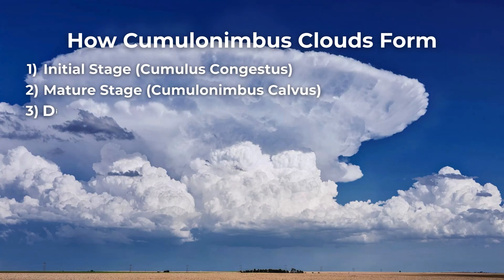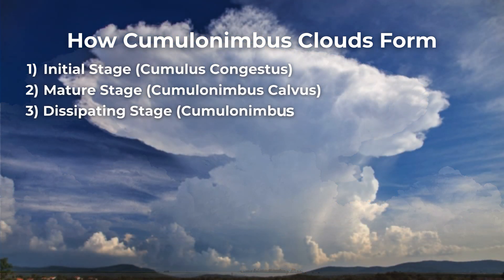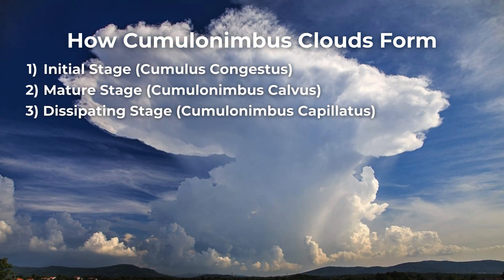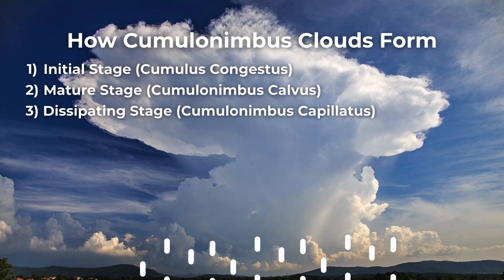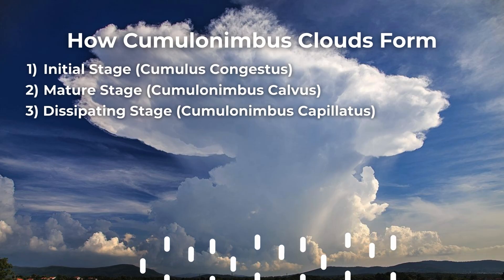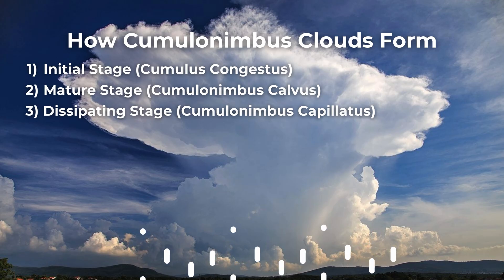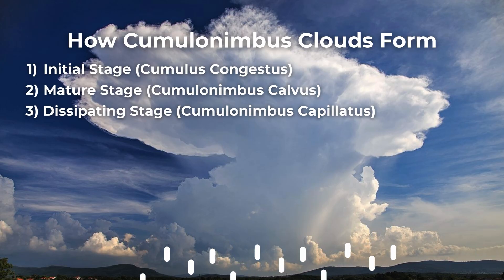Third, the dissipating stage: cumulonimbus capillatus. At a certain point, the cumulonimbus loses a large portion of its moisture as precipitation falls back to Earth. The downdrafts generated by the heavy precipitation begin to dampen and then suppress upward activity completely. The areas of the cloud that continued rising eventually reach the tropopause, spread out, and form the anvil peak, which can have a huge diameter. Eventually, this peak will be all that is left of the cloud as the precipitation wanes and the cloud dissipates.